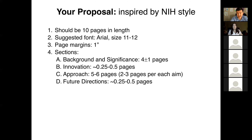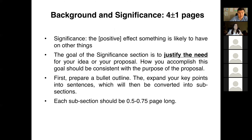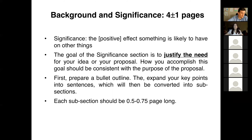Significance is one of the key reviewing criteria at NIH. The definition of significance is the positive effect something is likely to have on other things. In the context of the proposal, the goal of the significance section is to justify the need for your idea or proposal to exist — why the funding agency should realize this proposal is so significant that it should be funded, whether it advances medicine, materials, or another field. Don't limit yourself to the NIH goal; it's okay to write about material significance rather than health.